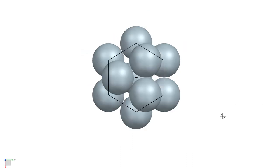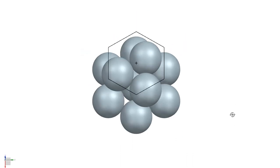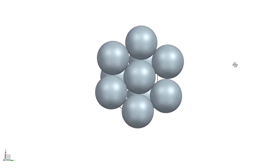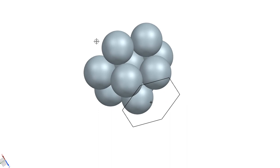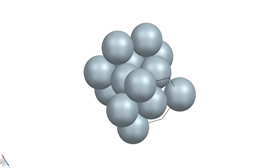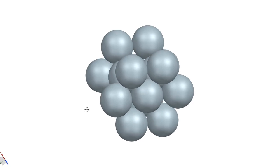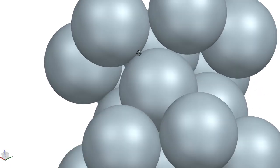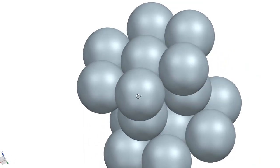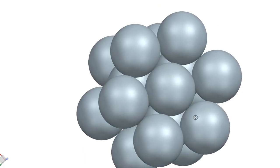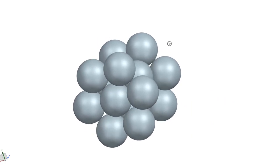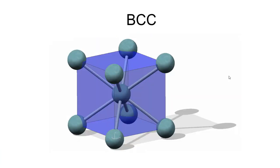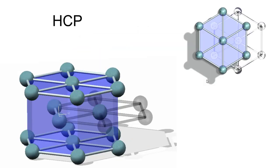The third structure is not cubic — it's hexagonal. The atoms are arranged in a hexagonal pattern, and each row of hexagons nests into the spaces of the hexagon above it, making a hexagonal structure. This is called hexagonal close-packed, or HCP. You need to know these three — BCC, FCC, and HCP — and be able to recognize them from an image.